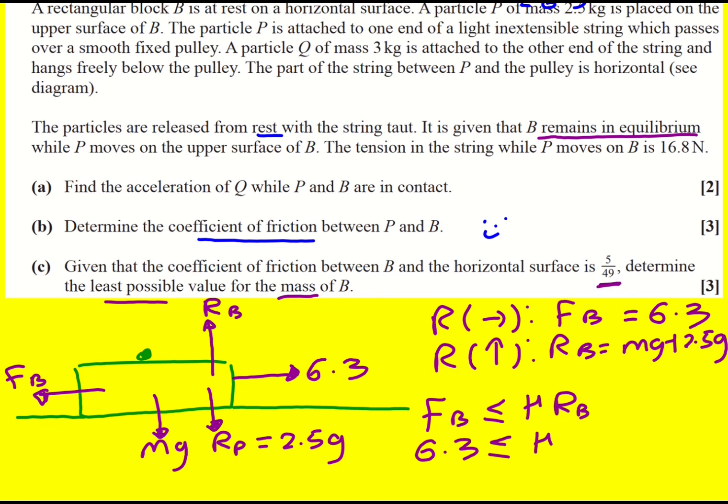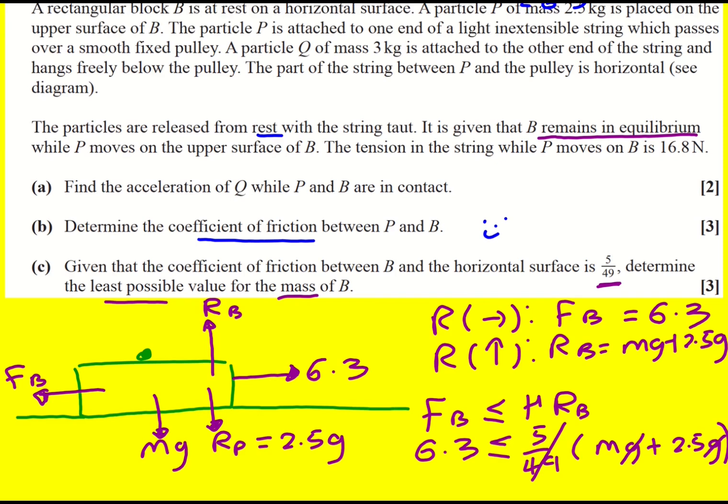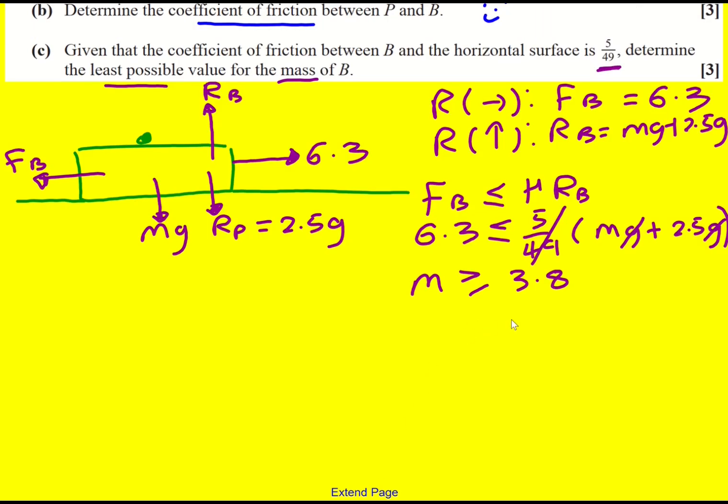Remember we're trying to find the least possible value of M so we might have to do something with the inequality. So I can replace FB by 6.3 and that is going to be less than or equal to μ. Oh and I just remembered they told us that it was 5 over 49. So 5 over 49 times MG plus 2.5G. Now it actually turns out that when you do 5 divided by 49 and you times it by 9.8 you get 1. This is actually 1 over G. So these cancel and therefore M is going to be greater or equal to 6.3 minus 2.5 which is 3.8. So we're saying that it has to be greater or equal to 3.8 and this is where the equality will come in. The smallest lowest value of M will therefore equal 3.8 kilograms.